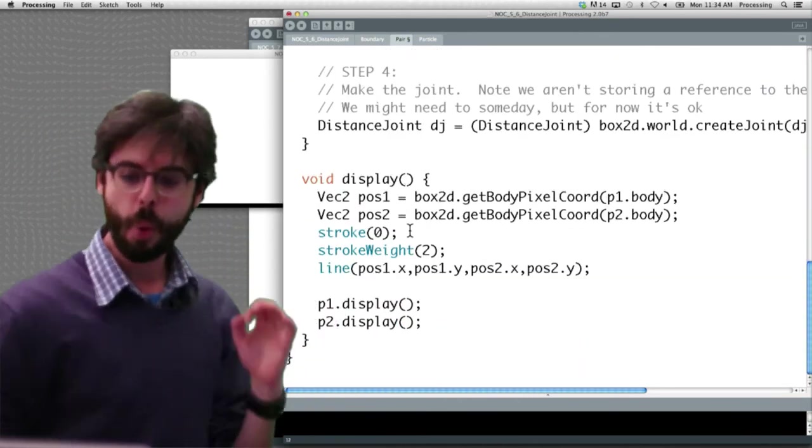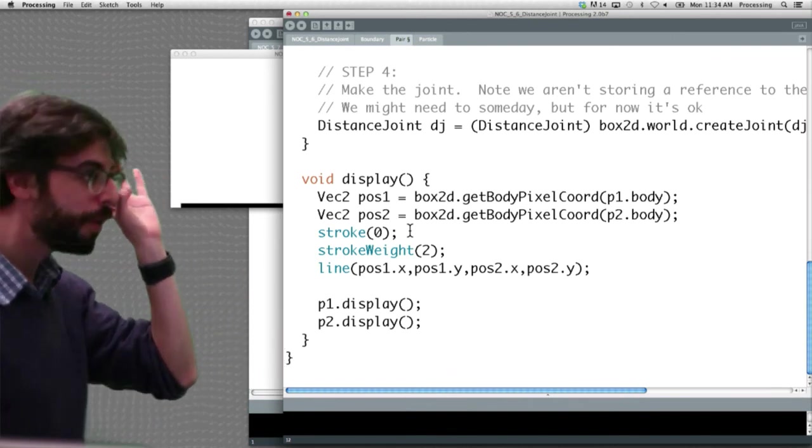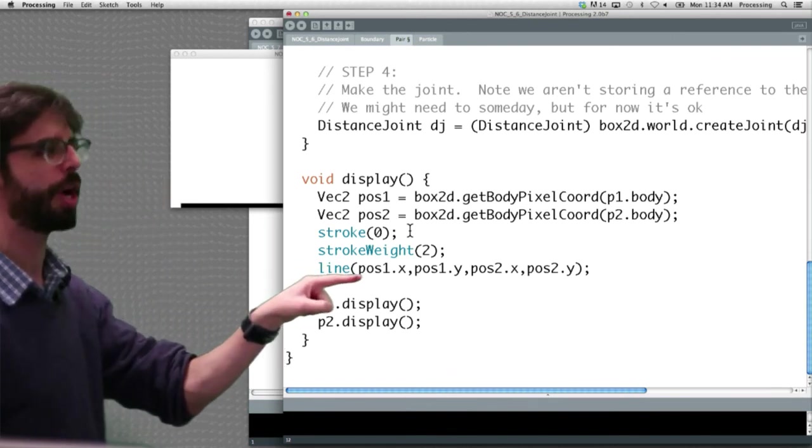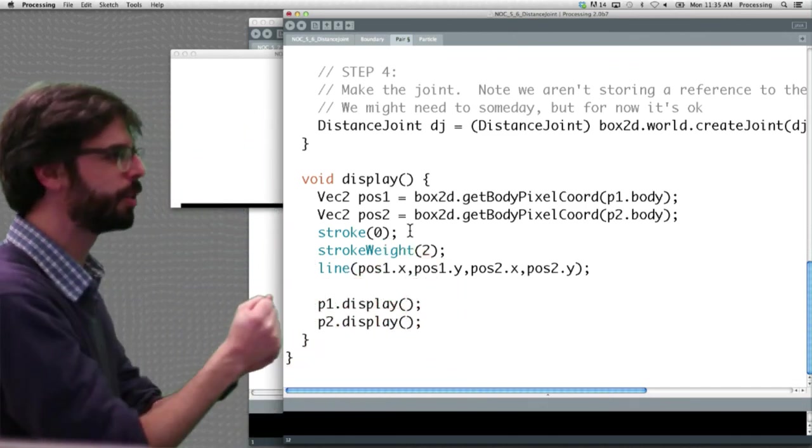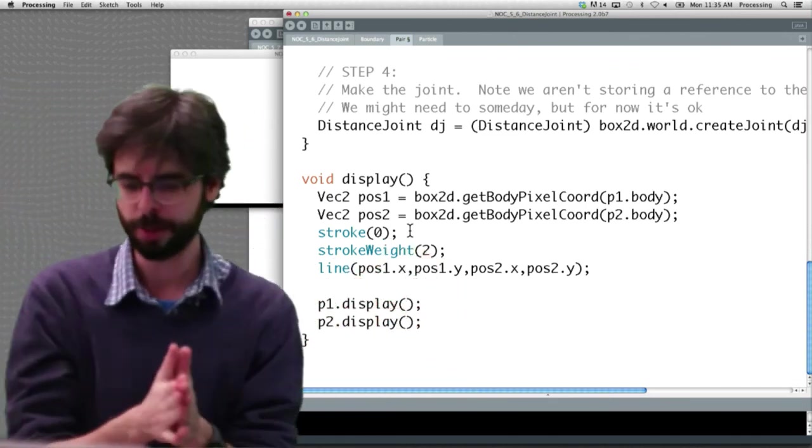Okay, so and then you can see later, how are we visualizing the joint? We're just drawing a line. So we know that that joint always connects those two bodies. We can make a line between those two.